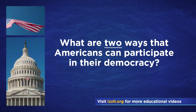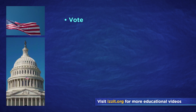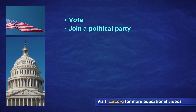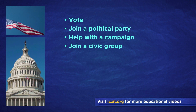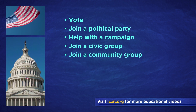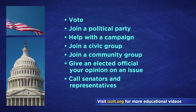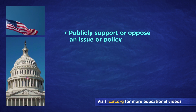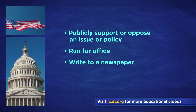What are two ways that Americans can participate in their democracy? Correct answers include: Vote, join a political party, help with a campaign, join a civic group, join a community group, give an elected official your opinion on an issue, call senators and representatives, publicly support or oppose an issue or policy, run for office, write to a newspaper.